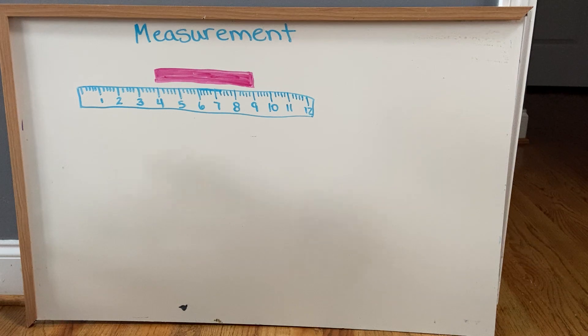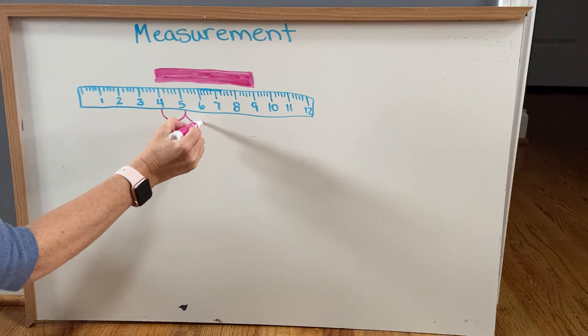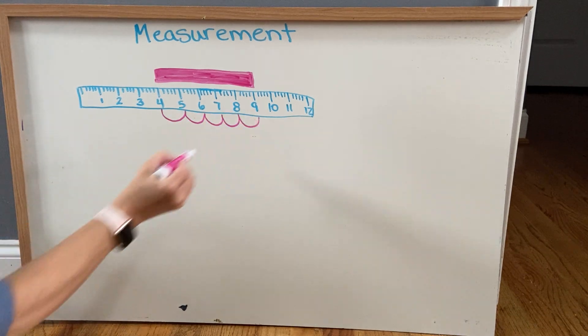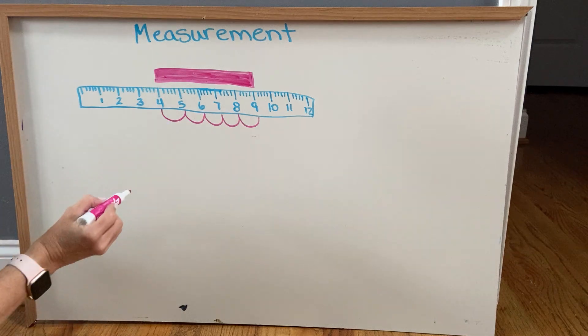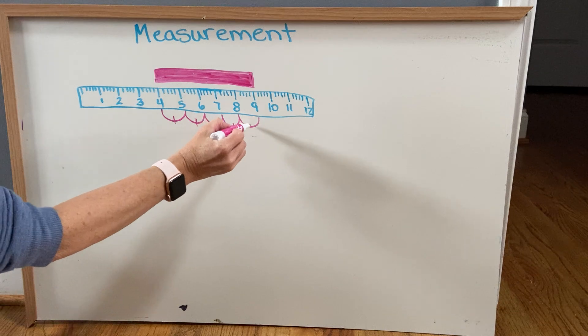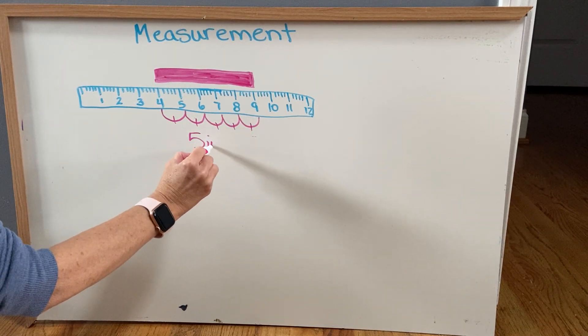So remember, wherever it starts, that's where we start counting, and we can hop from number to number to count how many inches it is. And if you forget how many you counted, put a little line on it. One, two, three, four, five. So the pink rectangle is five inches.